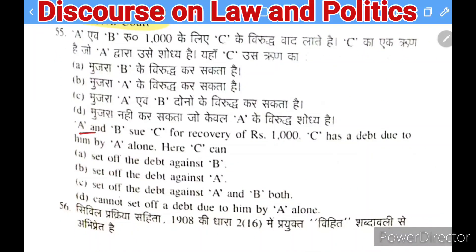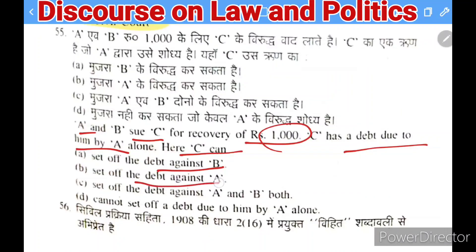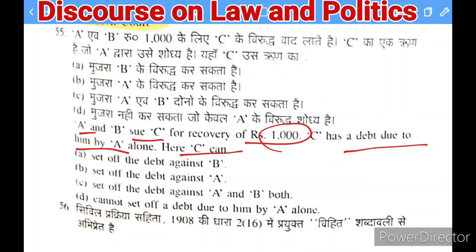Next question: A and B sue C for recovery of Rs. 1,000. C has a debt due to him by A alone. Can C set off the debt? Options: set off against B, set off against A, set off against both A and B, or cannot set off. The right answer is D — C cannot set off a debt due only from A in a joint suit by A and B.